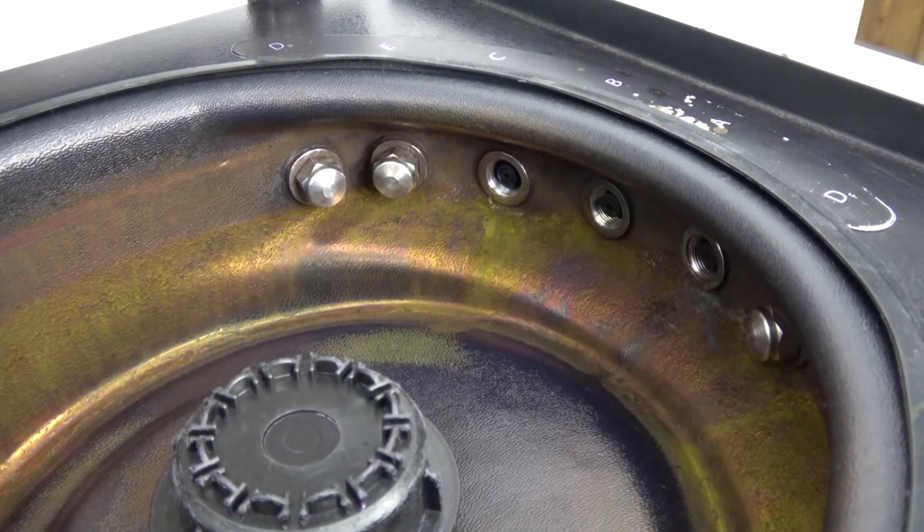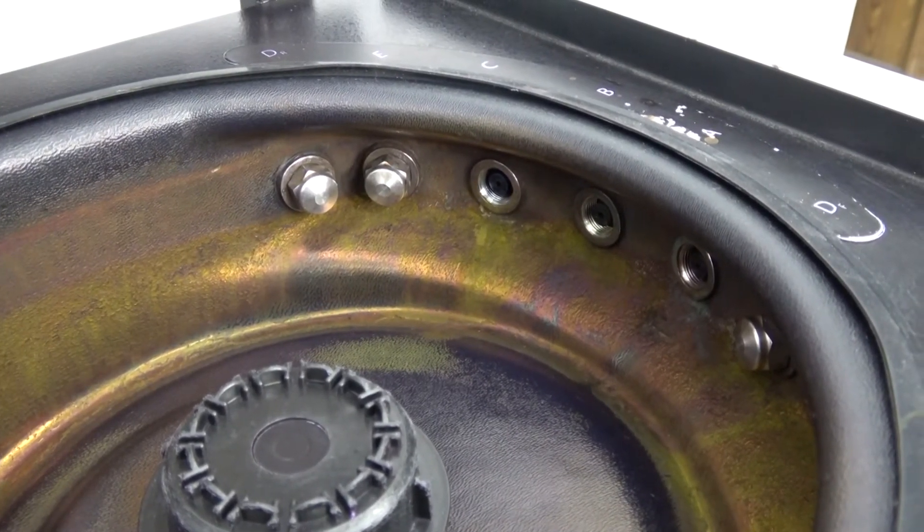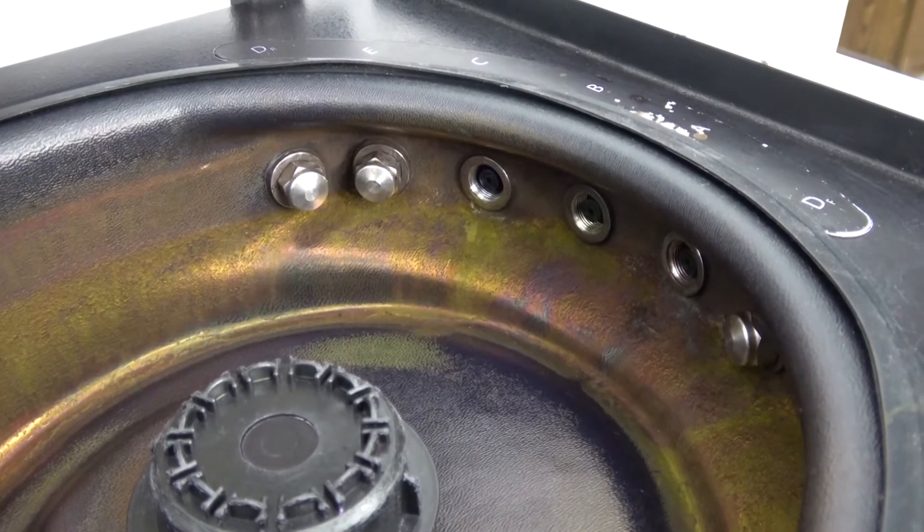On the inside you can see all of the nozzles and ports for your various stains and alcohol rinses and cleaning cycles.